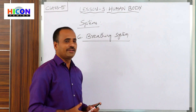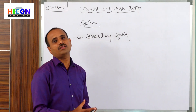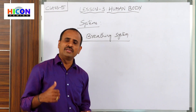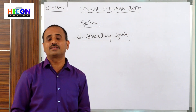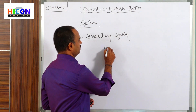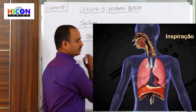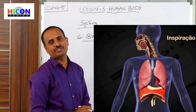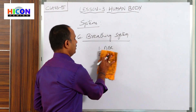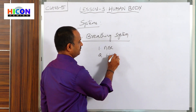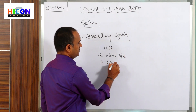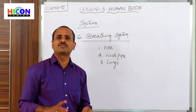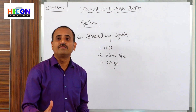Different animals breathe through different organs. All living organisms do not breathe with the same type of organs. For example, most animals and all human beings breathe air with the help of the nose. The important parts of the breathing system are the nose, the windpipe, and the lungs. These are the three main parts of the breathing system.